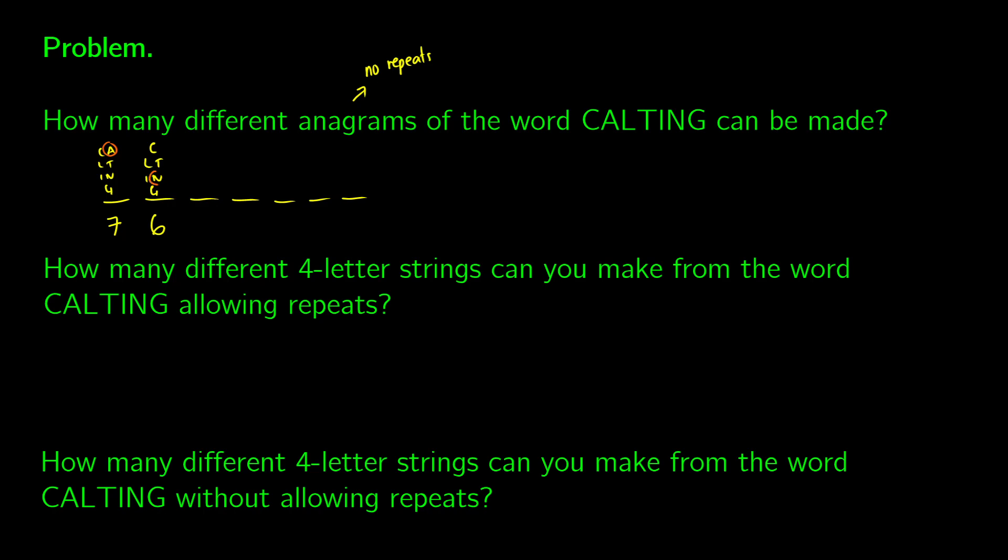What if we pick N for the second one? Well, now we're only going to be left with C, L, T, I, G as our third letter, which gives us five options. And this continues all the way down until we use up all of our letters. So this is going to be seven times six times five times four times three times two times one, which is just equivalent to seven factorial. So what you're seeing here is equivalent to this factorial notation. You take the number, you go down by one, by one, by one, and you keep multiplying those out until you get down to times one.